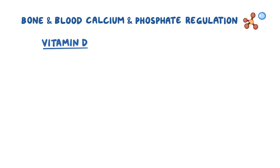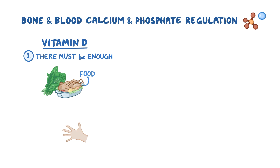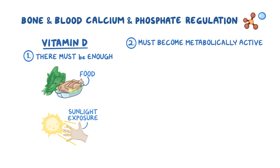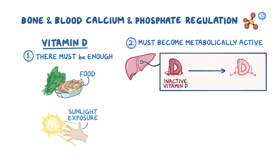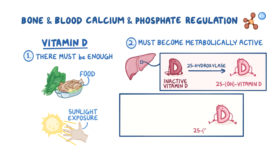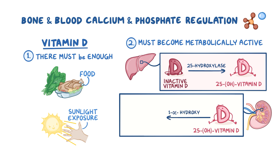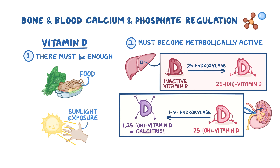Vitamin D-wise, two steps are necessary for optimal metabolism. First, there must be enough vitamin D in the body, either from food or created in the skin in response to sunlight exposure. Secondly, vitamin D must become metabolically active, and this process also has two steps. The first happens in the liver, where inactive vitamin D is converted into 25-hydroxyvitamin D. 25-hydroxyvitamin D then travels to the kidneys, where the enzyme 1-alpha-hydroxylase converts it to 1,25-hydroxyvitamin D, or calcitriol, which is the active form of vitamin D.